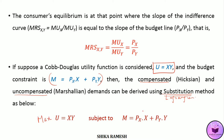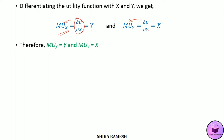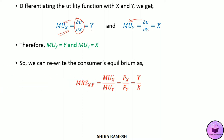Differentiating the utility function with respect to x and y we get del u by del x is equal to y, and del u by del y is equal to x. The derivative of total utility with respect to units of good x is the marginal utility of good x. So MUx equals y and MUy equals x. We can rewrite the consumer's equilibrium as MRS of x for y equals MUx by MUy, which equals Px by Py, which equals y by x.